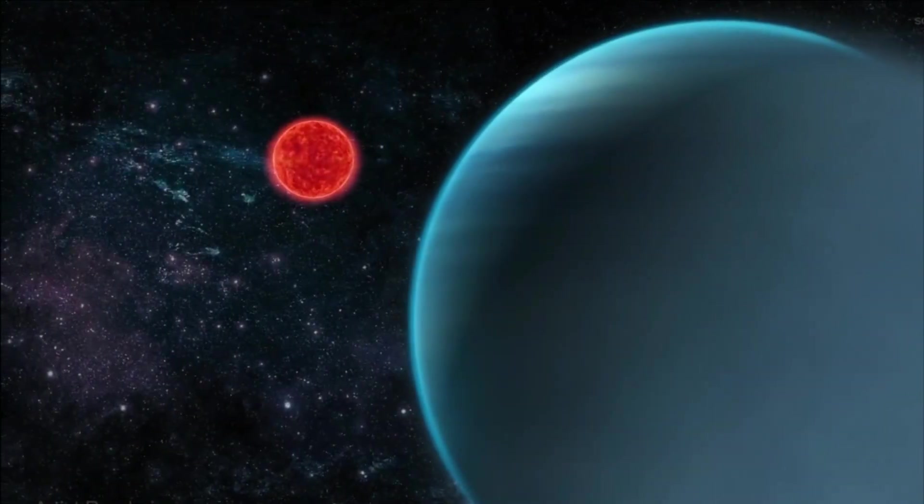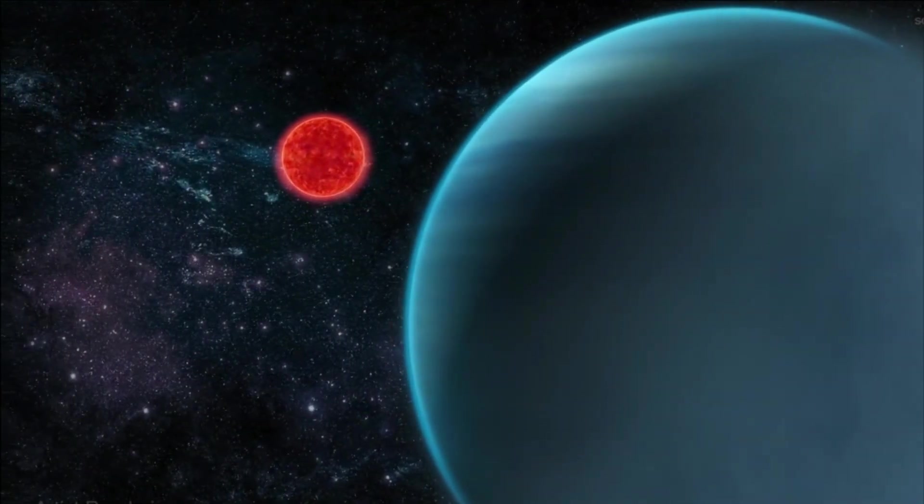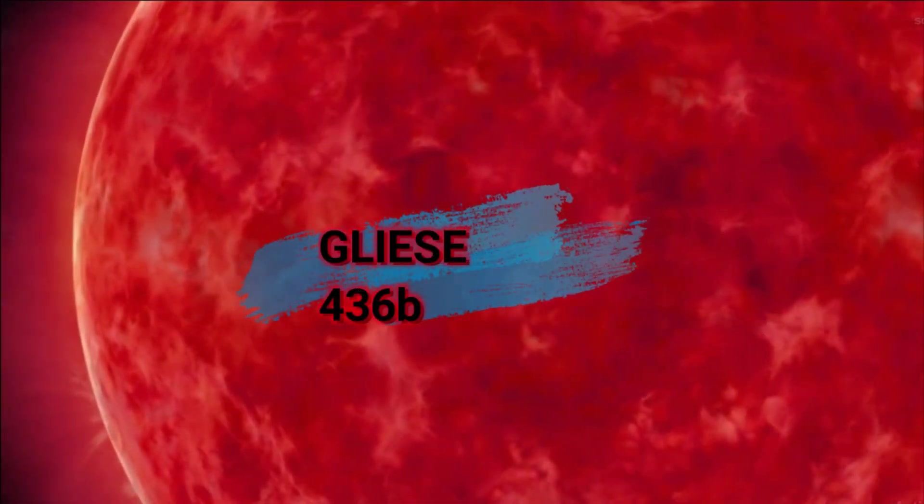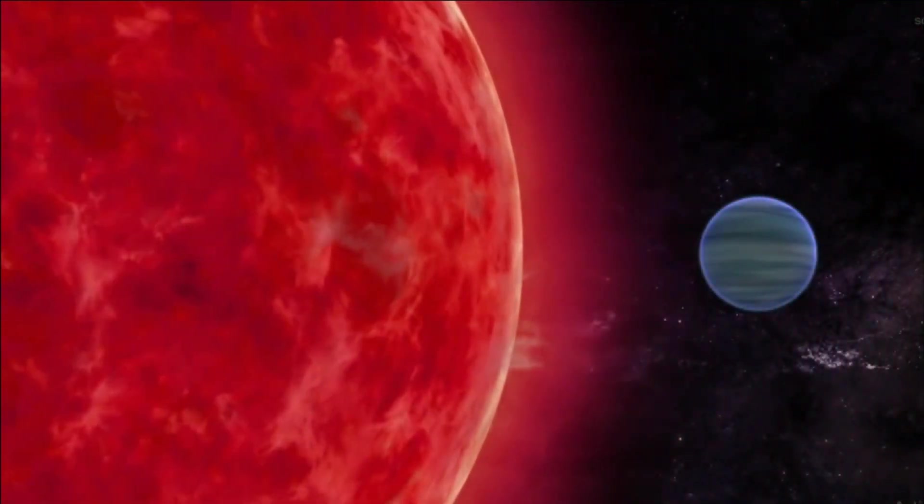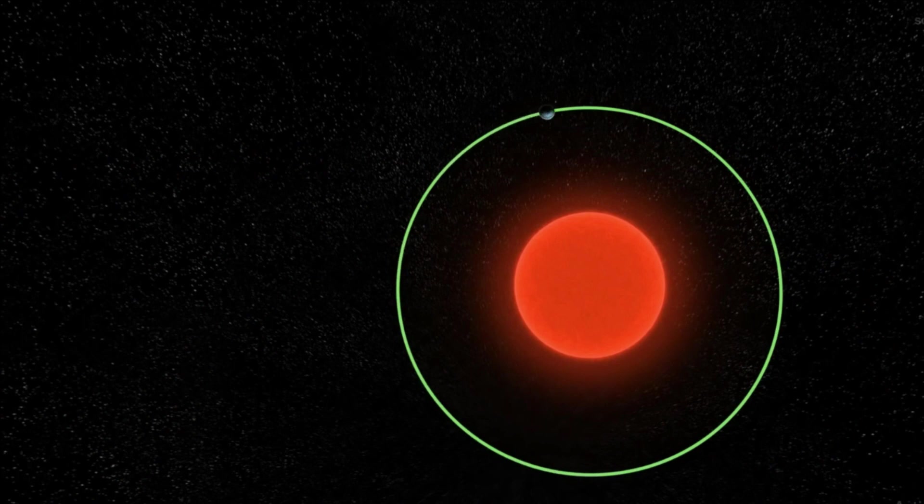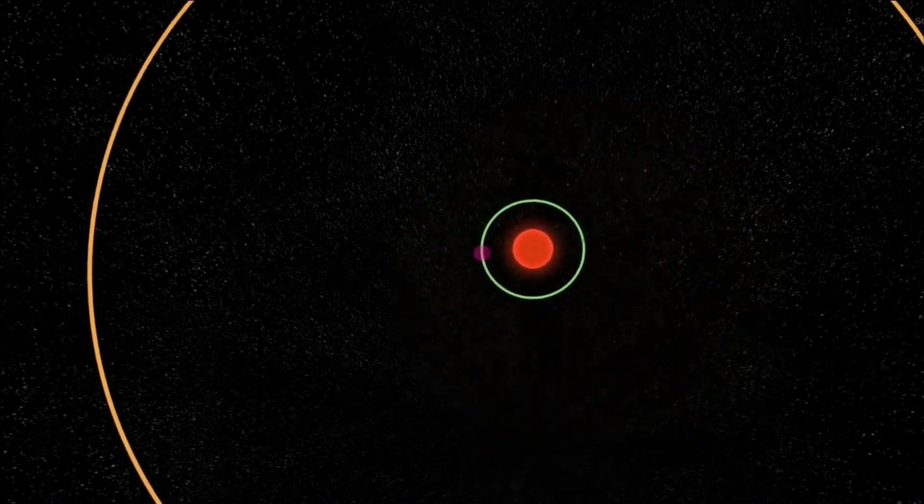And what if I tell you there is an alien planet with fire and ice at the same time? This mind-boggling exoplanet is called Gliese 436b or GJ 436b, which is exactly Neptune's size. Gliese 436b orbits a red dwarf star, Gliese 436, and its one orbit lasts only 2.54 days.